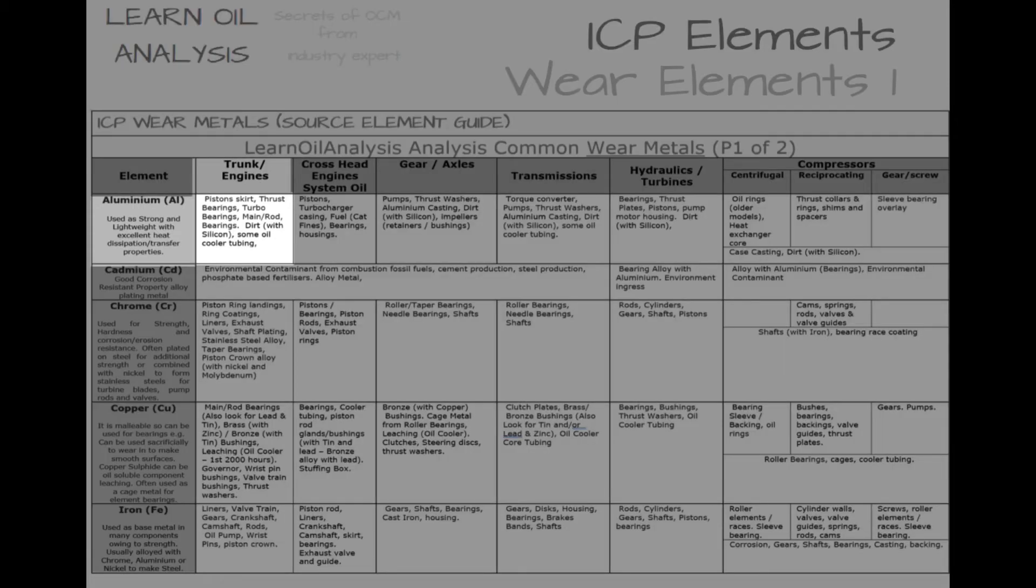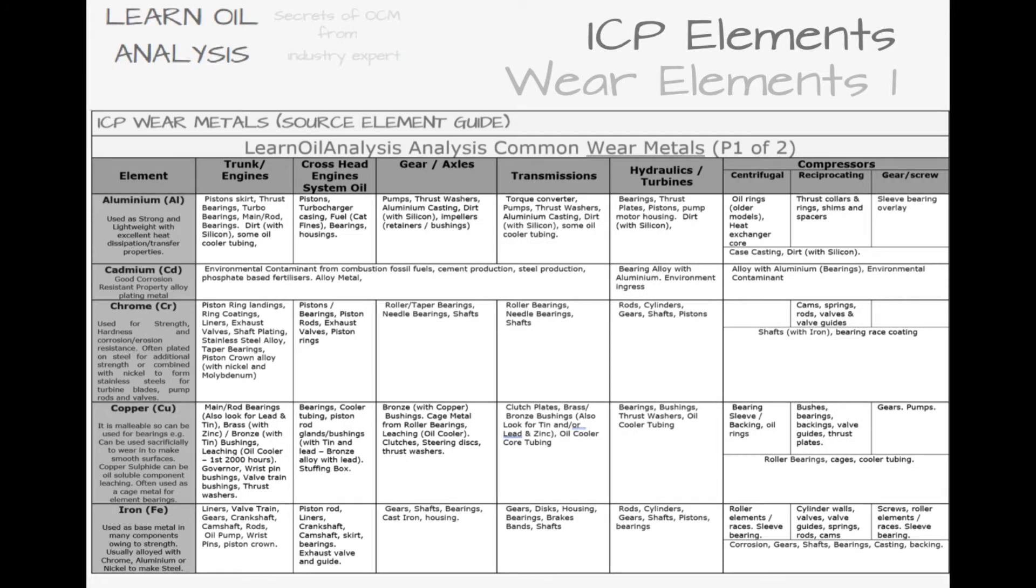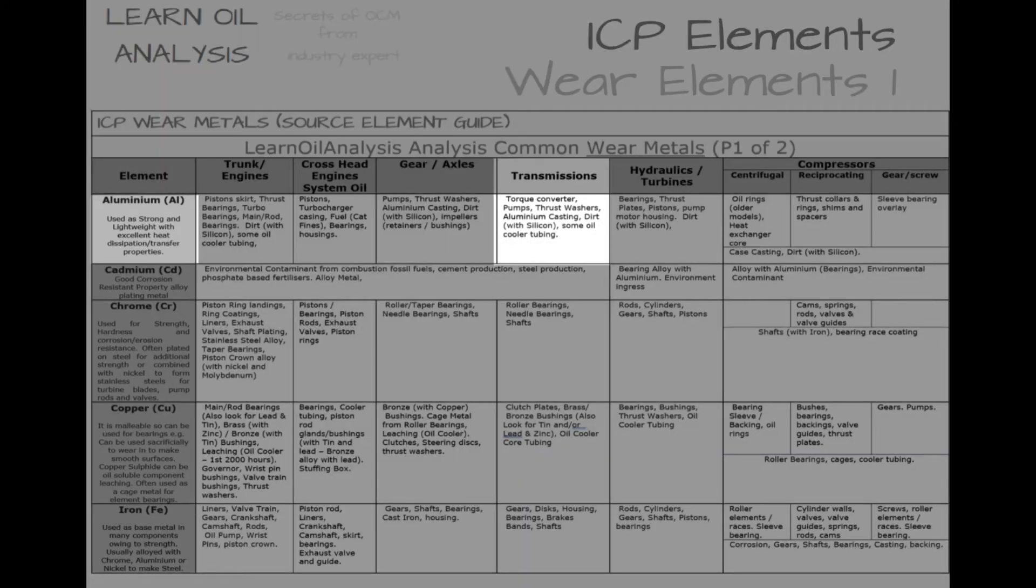Aluminium in engines tends to be from the piston. When seen with chrome from piston rings and iron from the liner, this suggests wear to the upper cylinder. In contrast, in a transmission, aluminium could be coming from the torque converter.